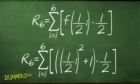This sigma notation is just a fancy way of writing the sum of the 6 rectangles, which is the approximate area under the curve.